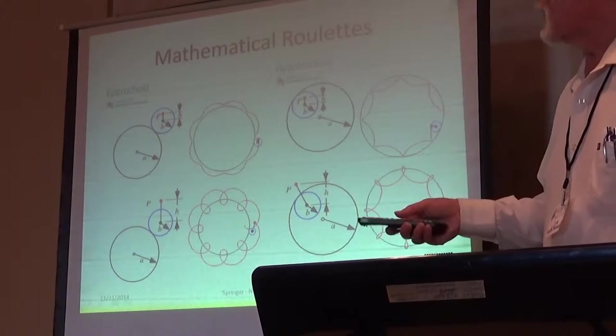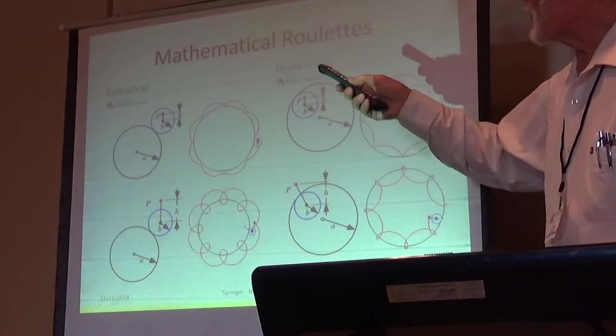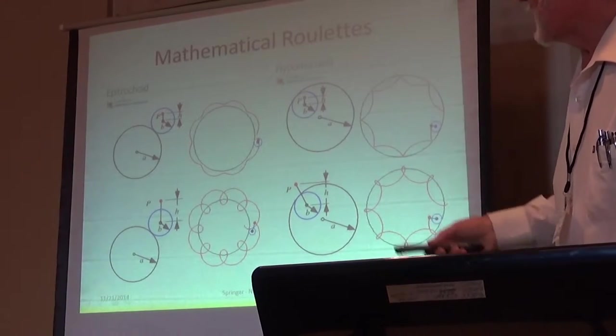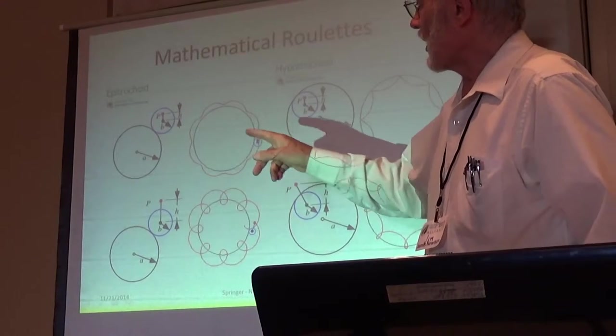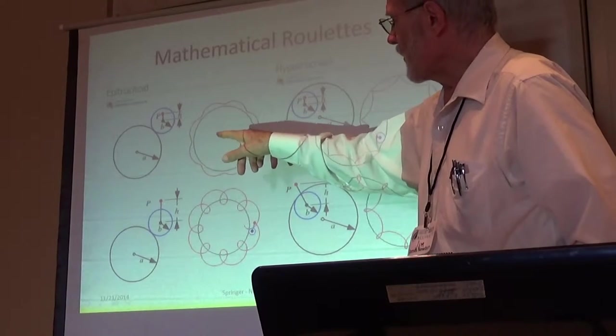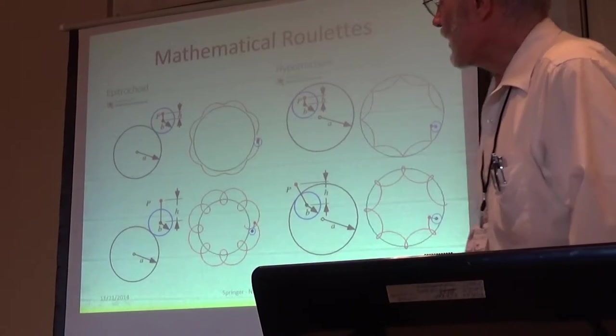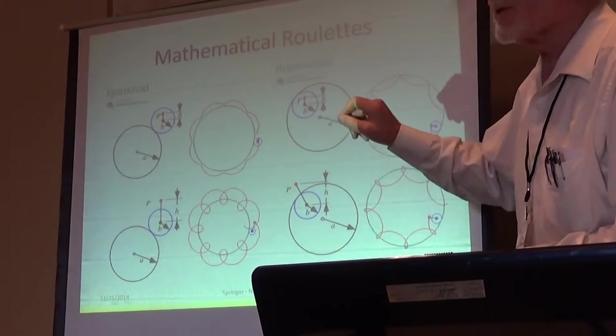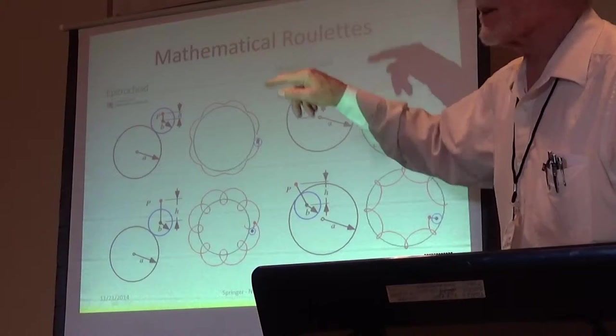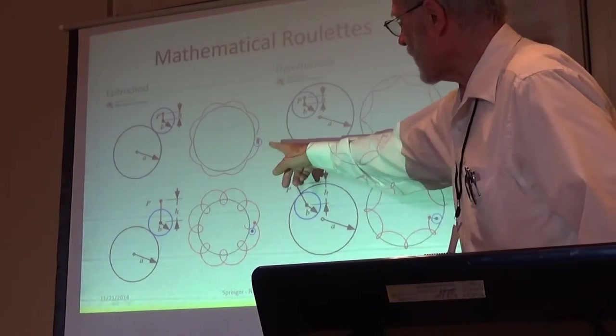So, he looked at epitrochoids and hypotrochoids. We have two circles, large one radius A, and a small one B. And if you have a point on a circle, a small circle, and it rotates around, that red point, we follow this pattern right here.